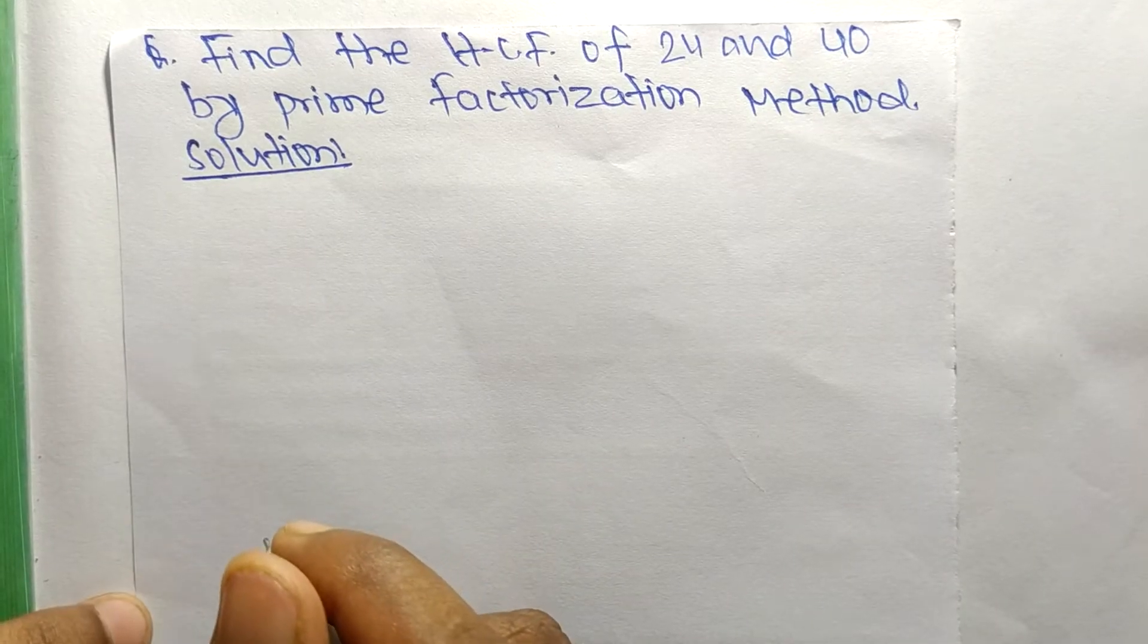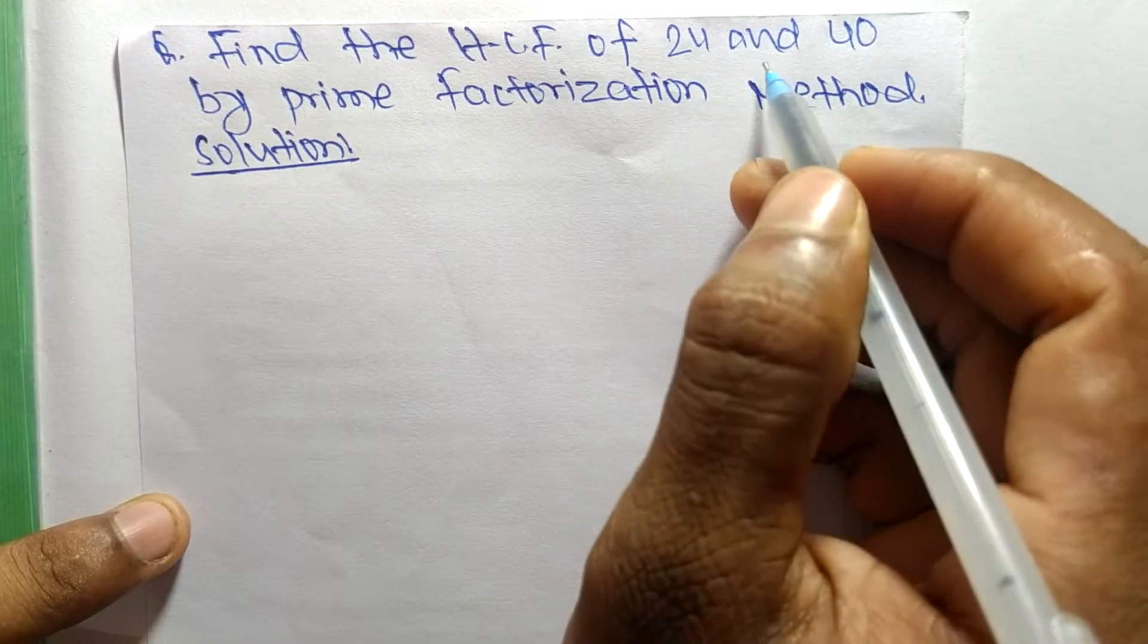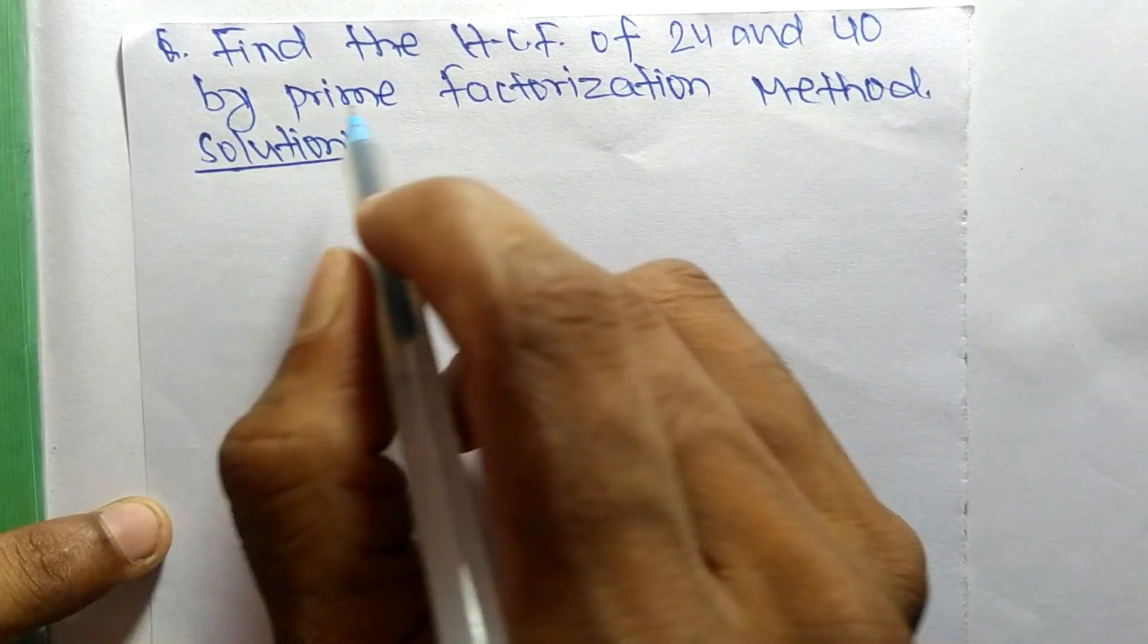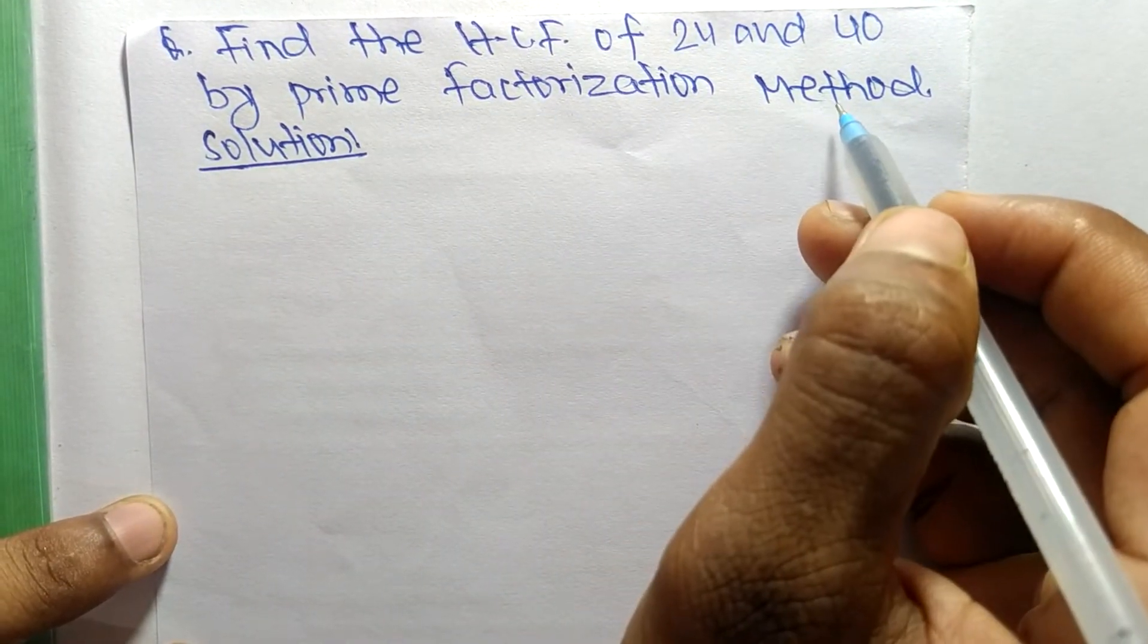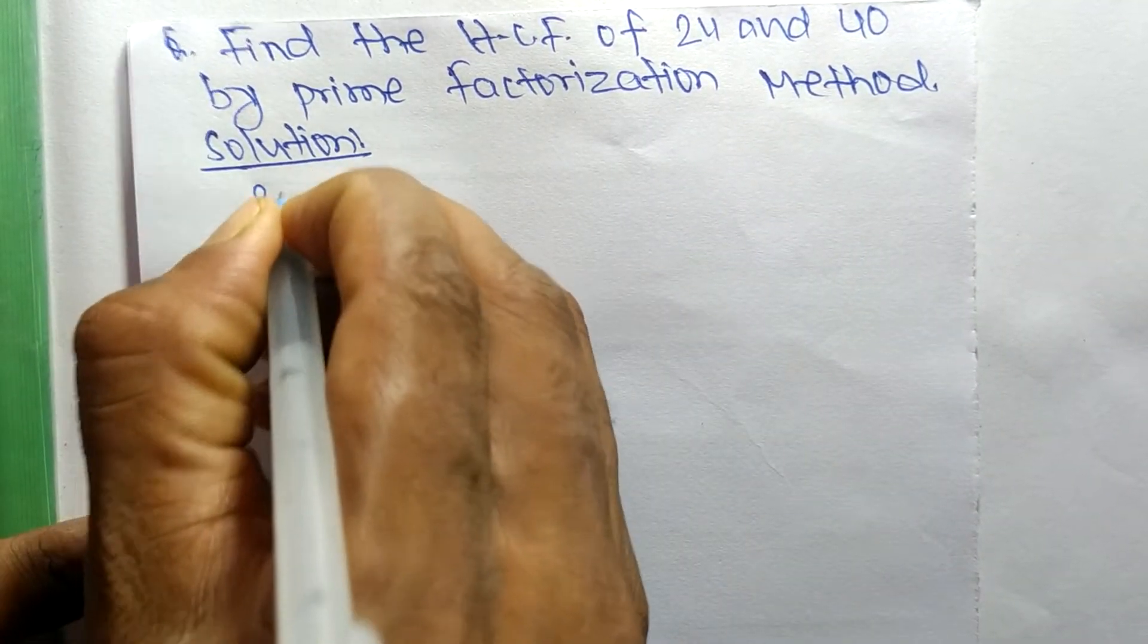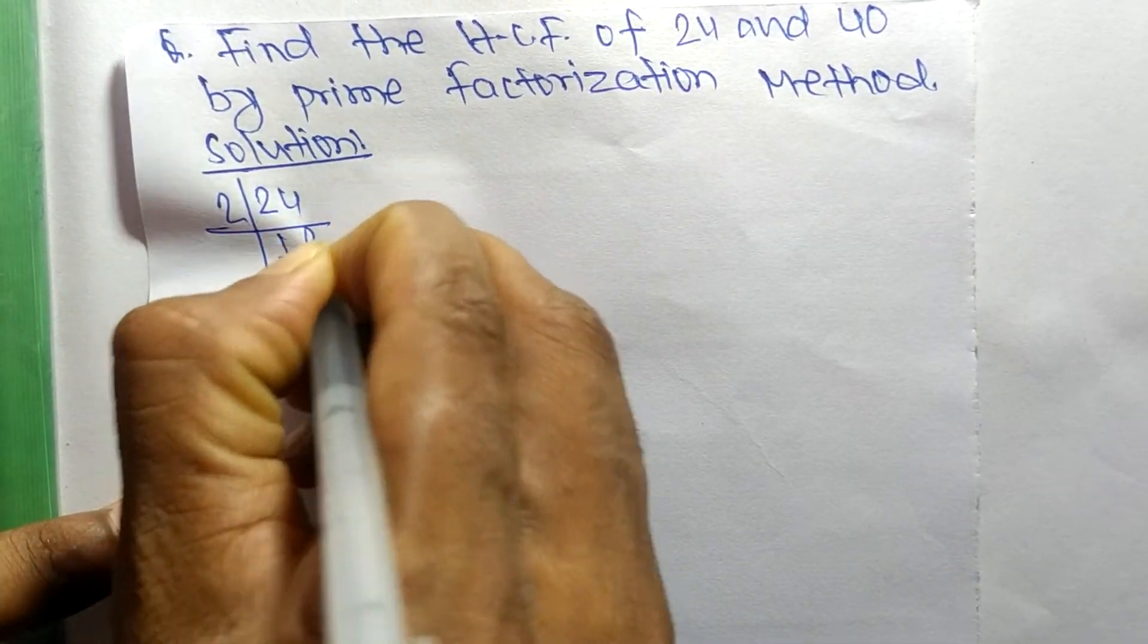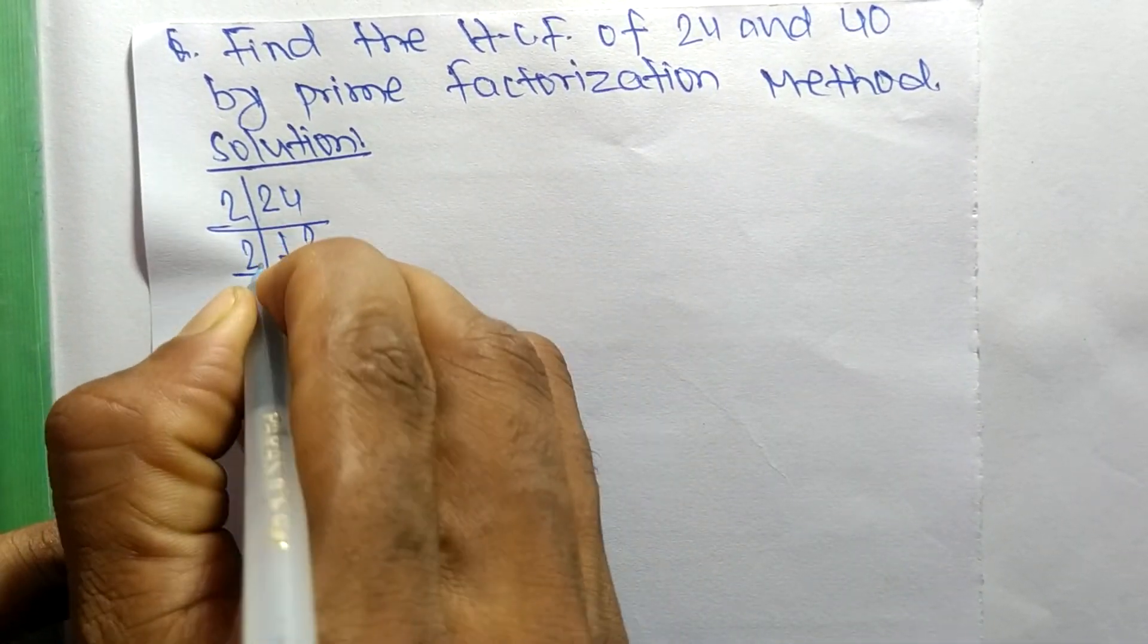Today in this video we shall learn to find the HCF of 24 and 40 by prime factorization method. First, we find out the prime factors of 24. It is 2 times 12 means 24, then 2 times 6 means 12...